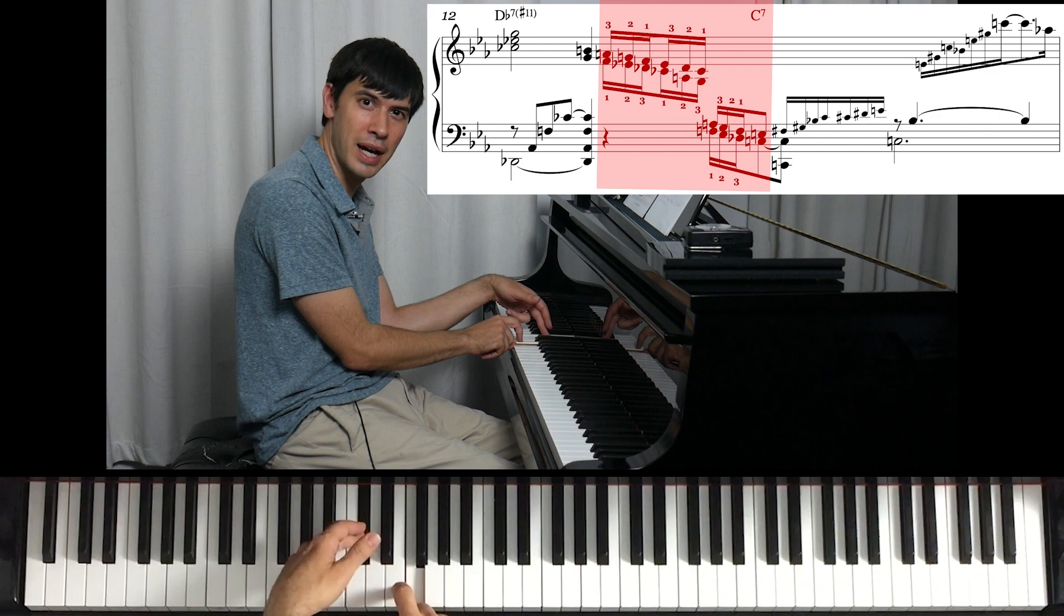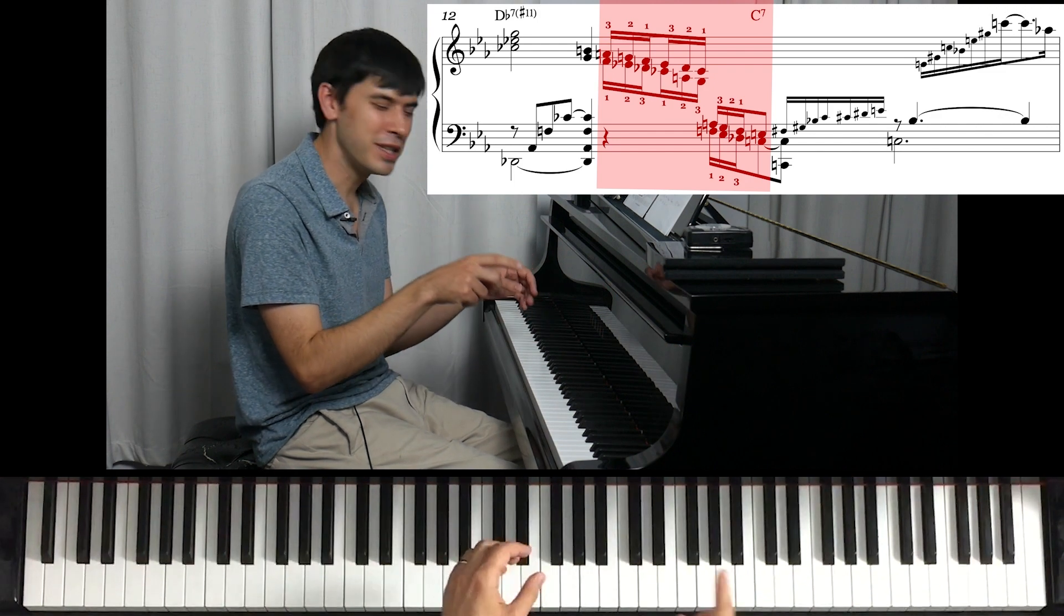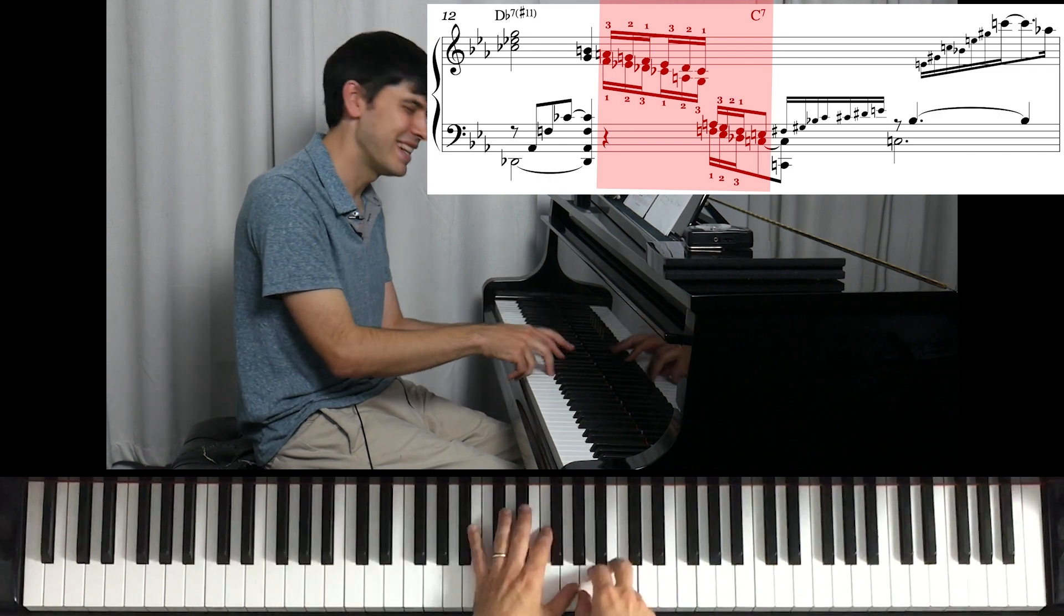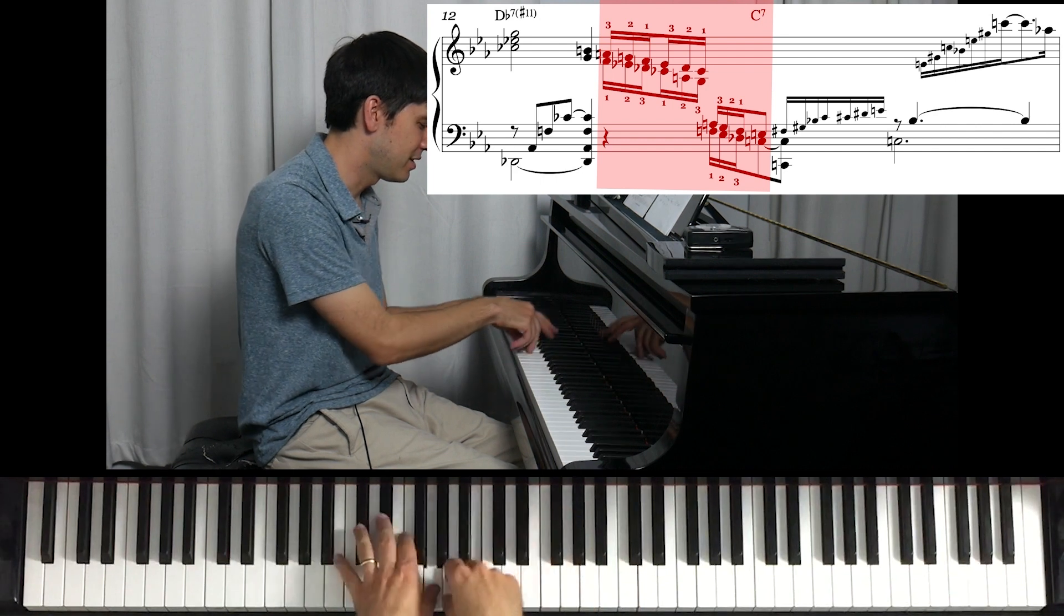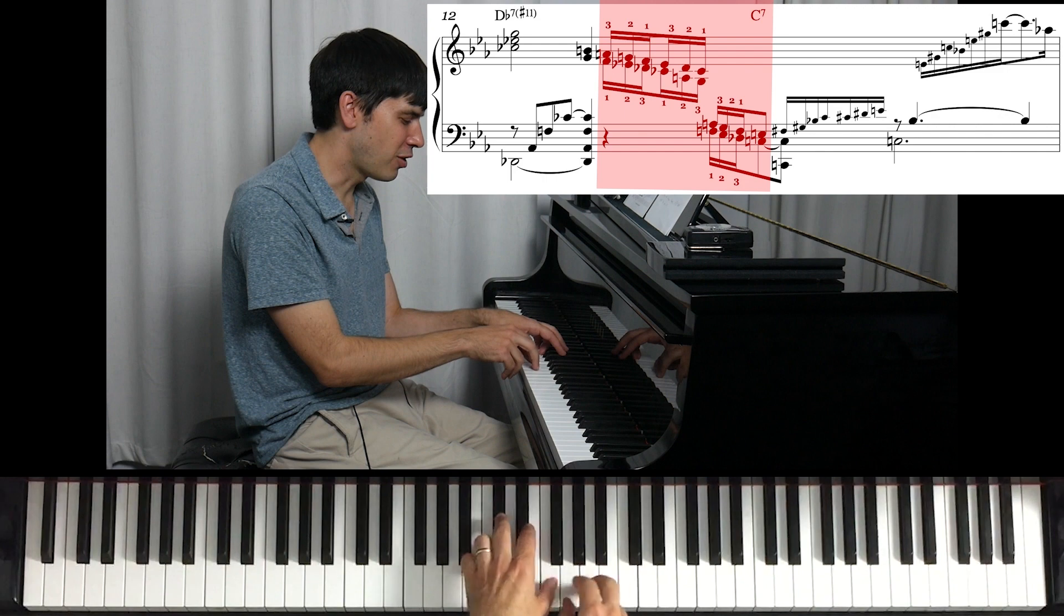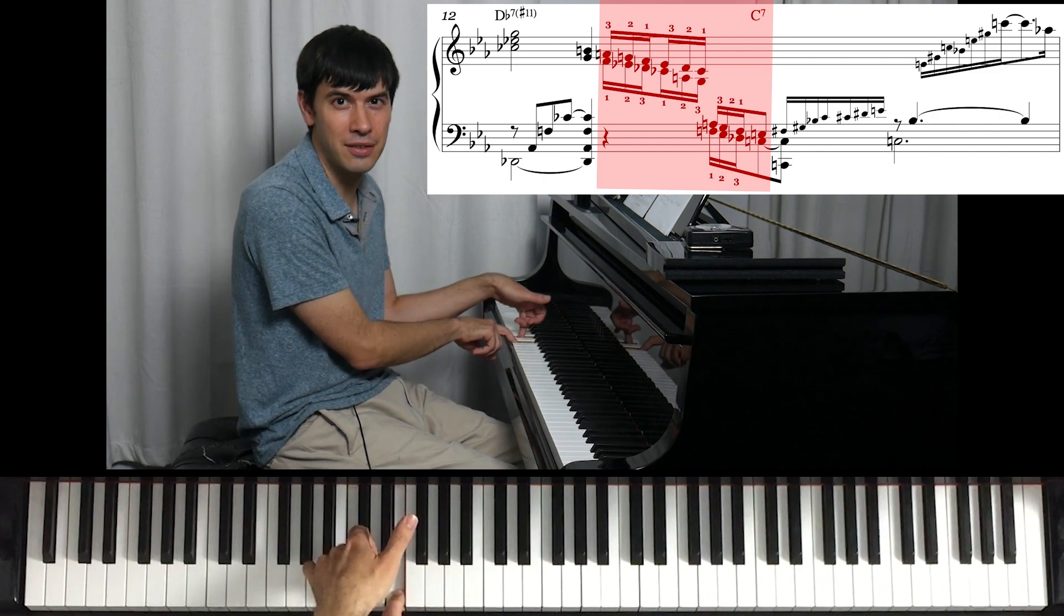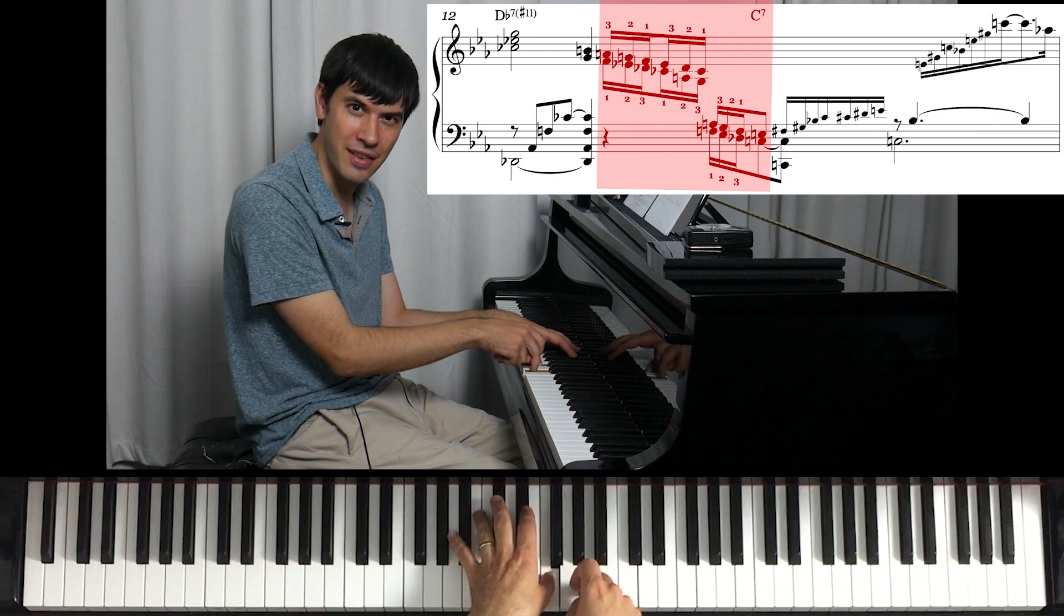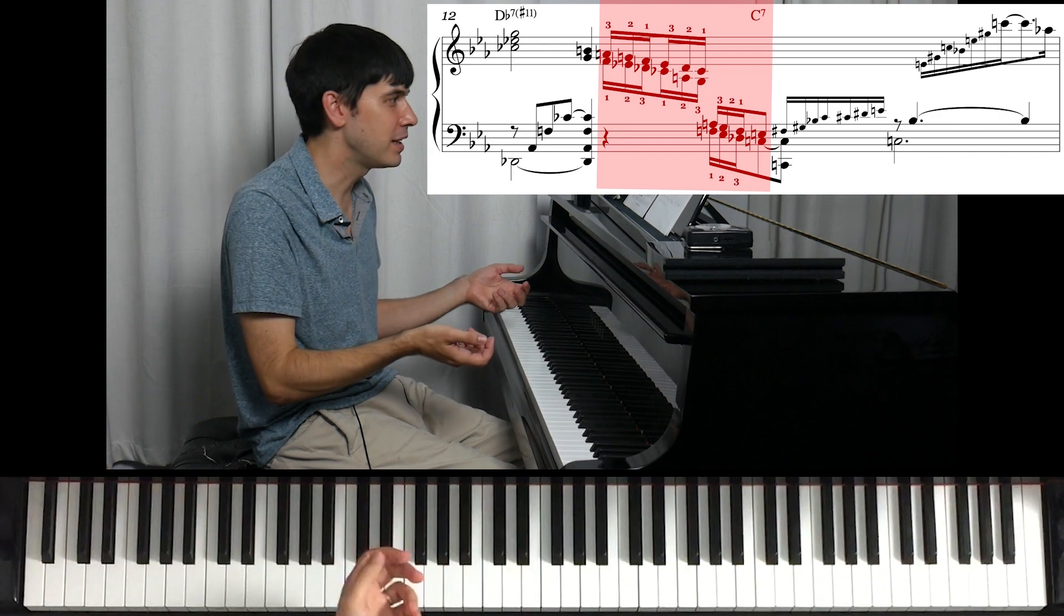And then it lines up nicely to go a half-step down to C. Now it's funny, if you started on this note, it's a little harder to play because your thumb ends up on a black note. It's not impossible, but starting here, it's just a little easier. And Barry does that on purpose. You can see he starts the triplets on the F. It makes it play a little easier.